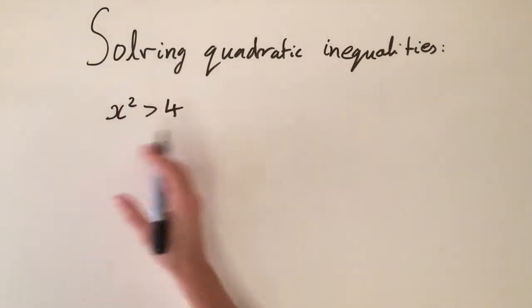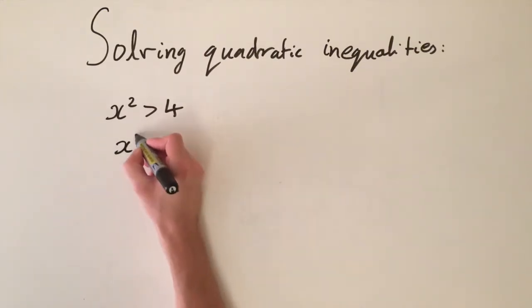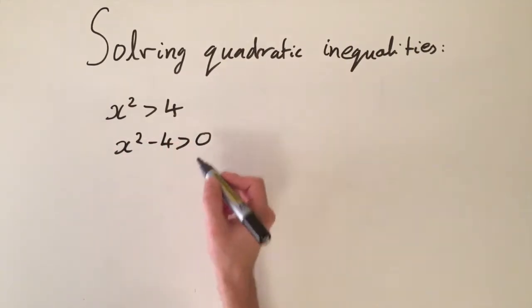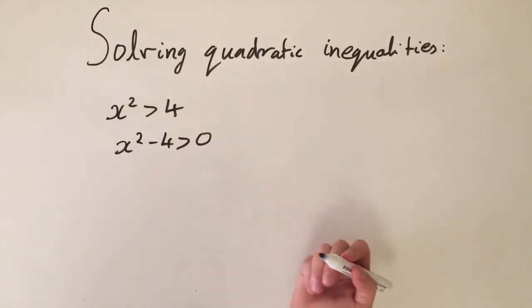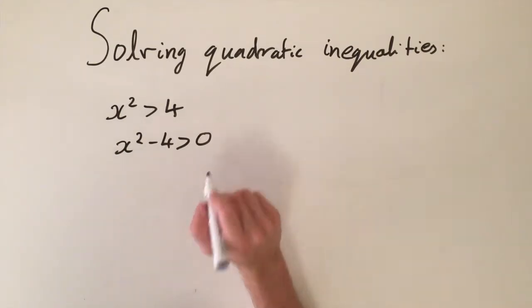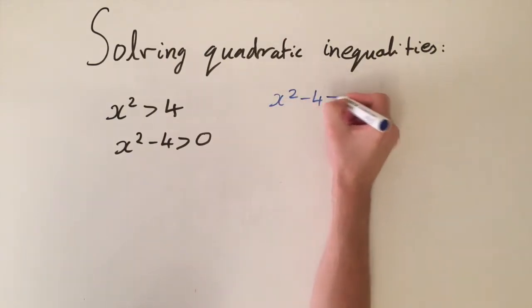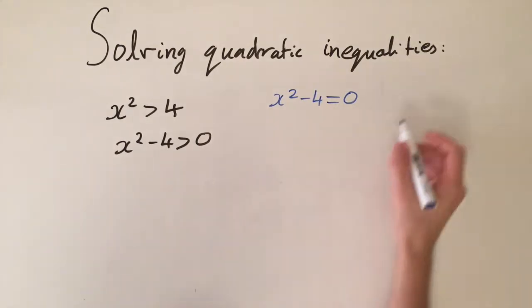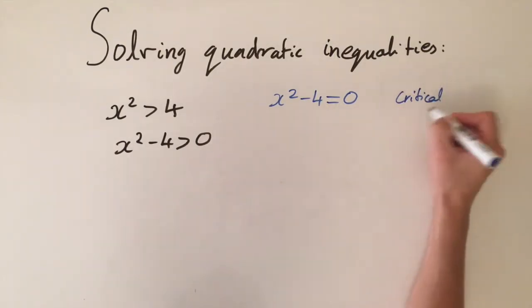First off we want to move everything to one side so we have a zero somewhere. I'm just going to move the four onto the left hand side, and then we have x squared minus four is greater than zero. The next thing that we do — it might seem a bit surprising — but we essentially ignore the inequality and we replace it by an equality. So we write x squared minus four is equal to zero. This is called the critical equation.